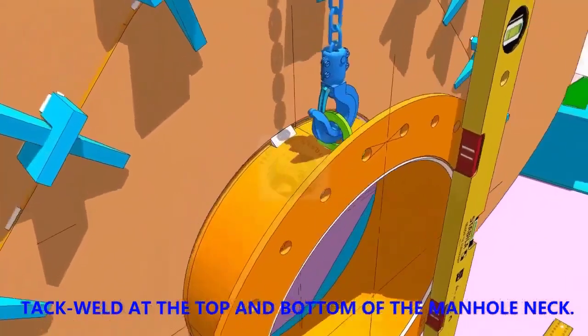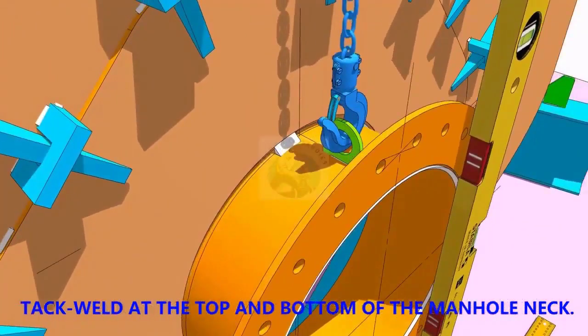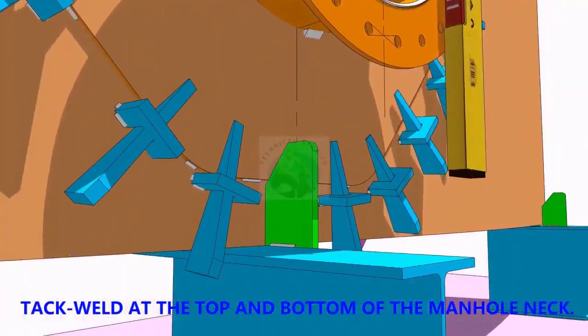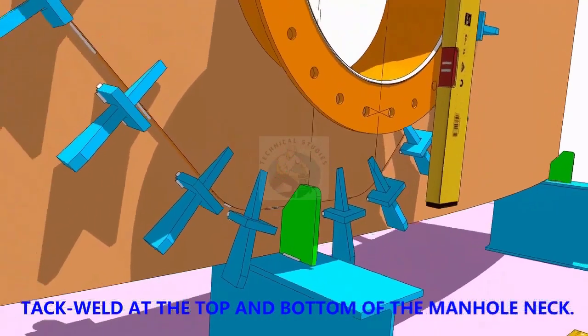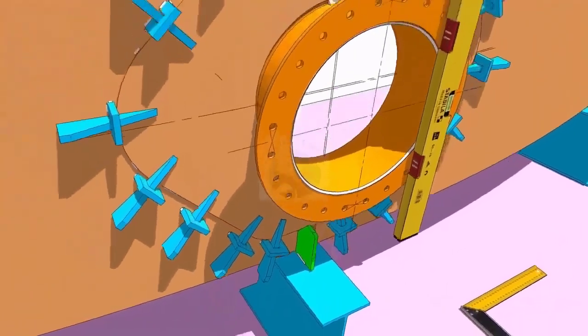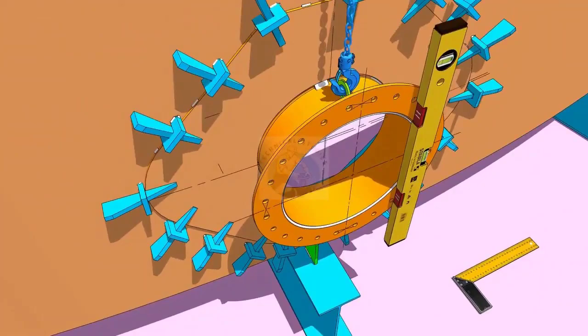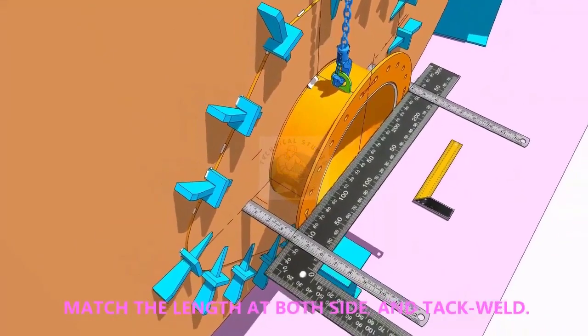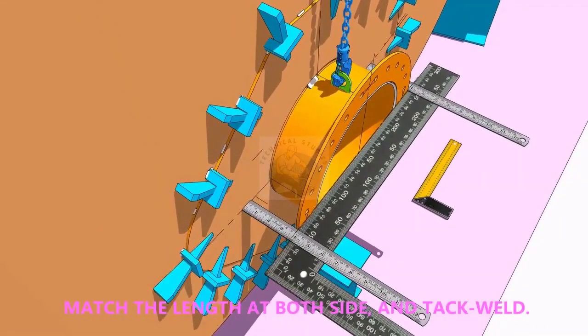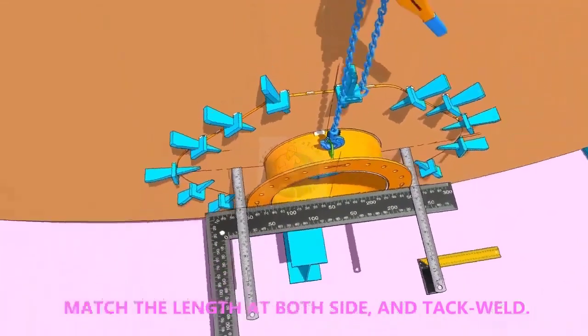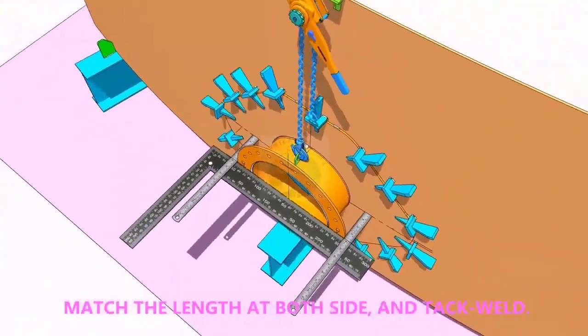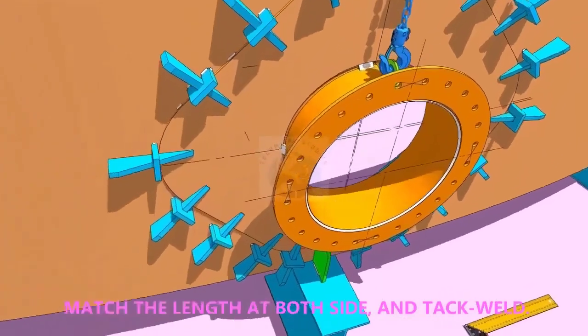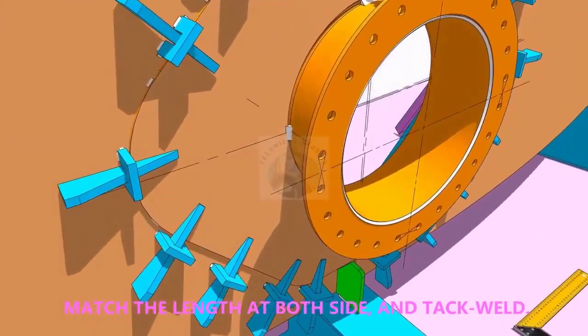TAC weld on the top and bottom side in the joint. Equal the distance on both sides of the flange as shown and TAC weld on both sides. Weld additional TACs to strengthen the joint.